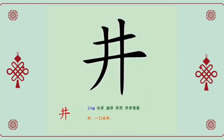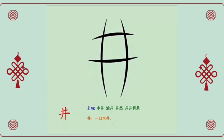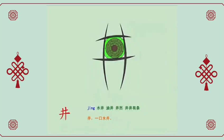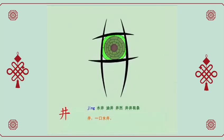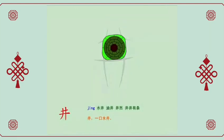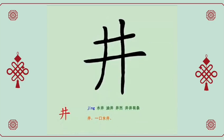井, well. The character is shaped like a well. 水井, water well. 油井, oil well. 井井有条, in perfect order.